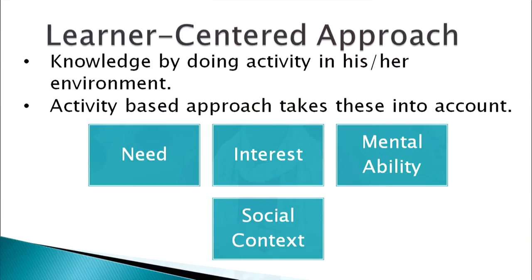Then we consider mental ability. Books differ according to the child's level — in first grade we introduce pictorial books with more illustrations and less text, and as we move forward the text increases. So if I take storytelling as an activity, I do it according to the mental ability of the child. The fourth element is social context — we do activities which are relevant to the child's social context, useful and not too foreign to them.